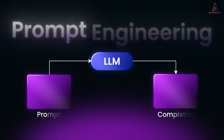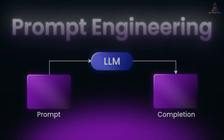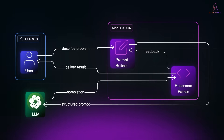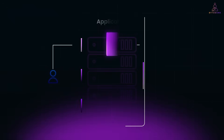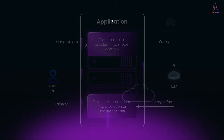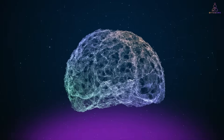Prompt engineering starts with a line of text. But at its best, it's a system — a pipeline of inputs, context, completions, and actions working together to solve problems with language. In the next video, we'll turn that into a full loop: taking user input, shaping prompts, getting completions, and turning them into real results. We'll even show you how to add memory, tools, and APIs, just like Bing Chat or AutoGPT. Hit subscribe and let's build it together.